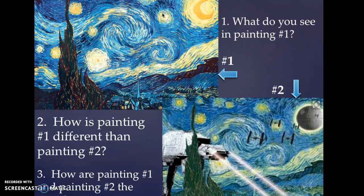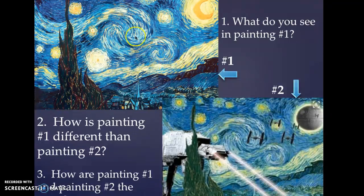I asked you in your sketchbook to think about these two paintings right here — this one and this one — and how they are similar and how they are very different from each other. We talked about a few things that we see, and I'm going to tell you now what this painting is and what this painting is.